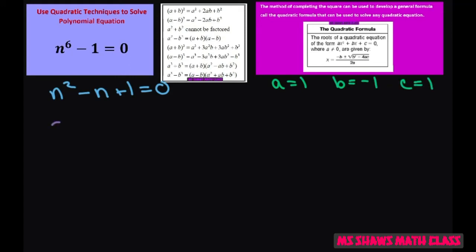Using your quadratic formula, you get x equals negative b, so that's positive 1 plus or minus square root of negative 1 squared minus 4ac, all divided by 2.